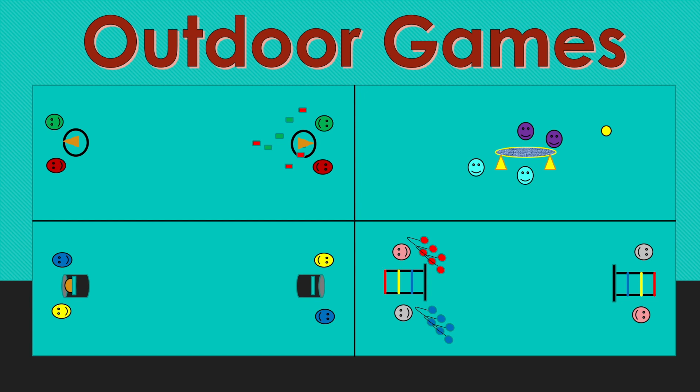The last station is ladder ball. In this game teams alternate turns trying to make the rope land on one of the ladder rungs. The top rung is worth one point, the middle is worth two, and the bottom is worth three points. You tally all the points at the end of the round and play to 21.